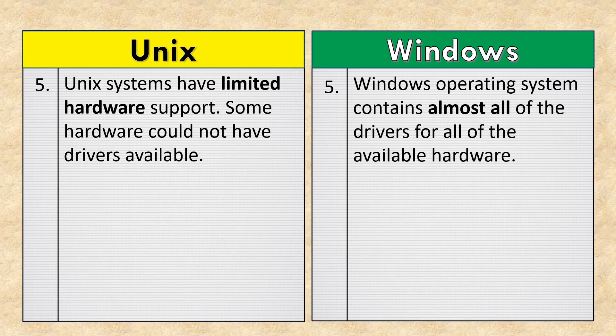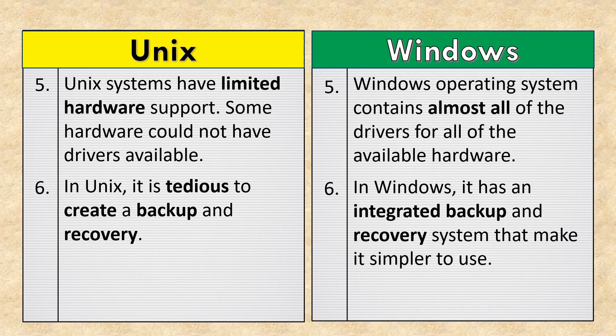Unix systems have limited hardware support, and some hardware could not have drivers available. Windows operating system contains almost all of the drivers for all of the available hardware. In Unix, it is tedious to create a backup and recovery. In Windows, it has an integrated backup and recovery system that makes it simpler to use.